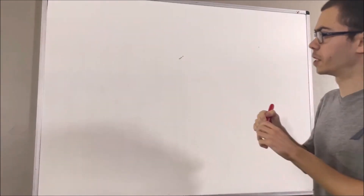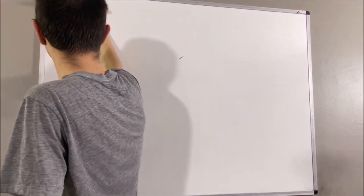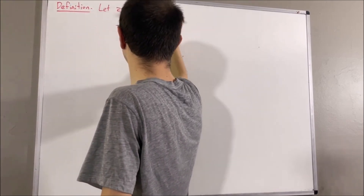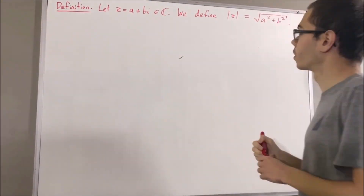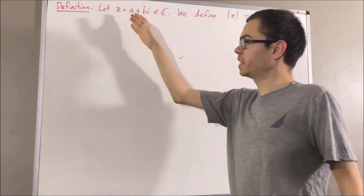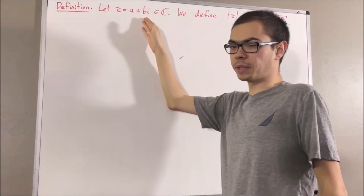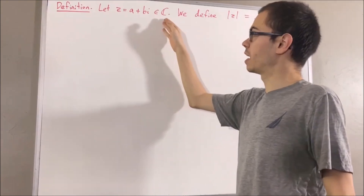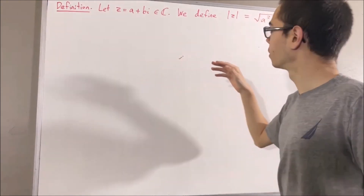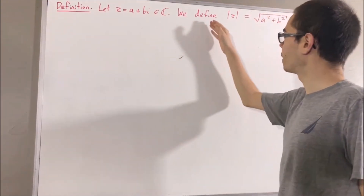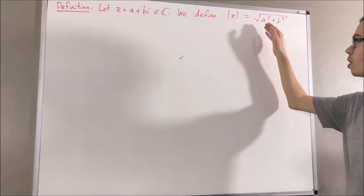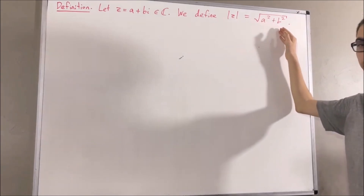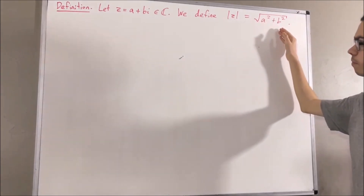Let's start out with the following definition. Let z equal a plus bi be a complex number. We define the absolute value of z to be the square root of a squared plus b squared.